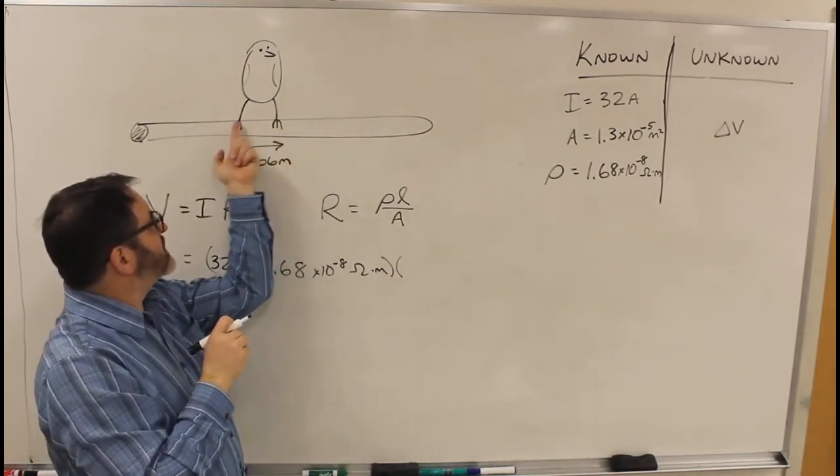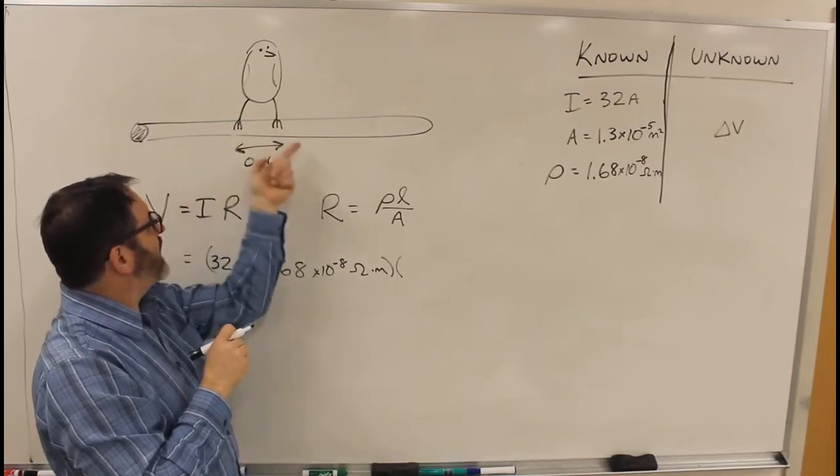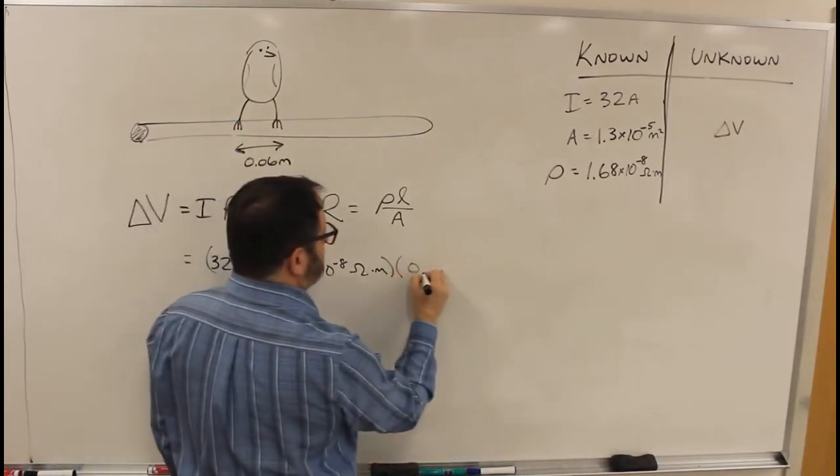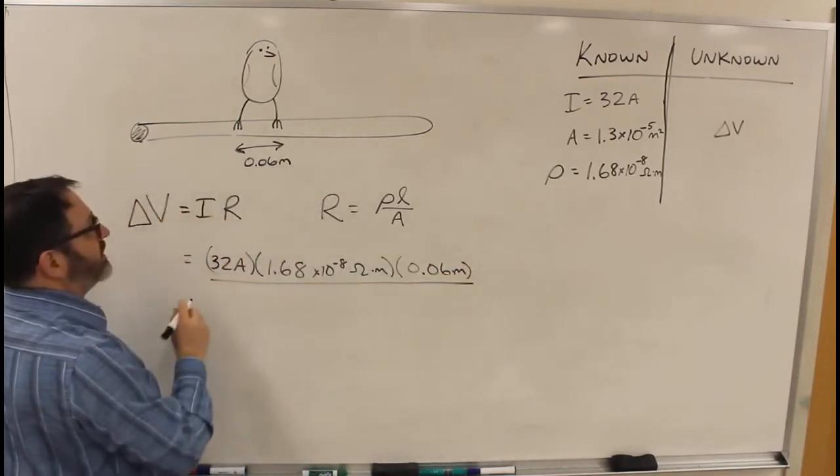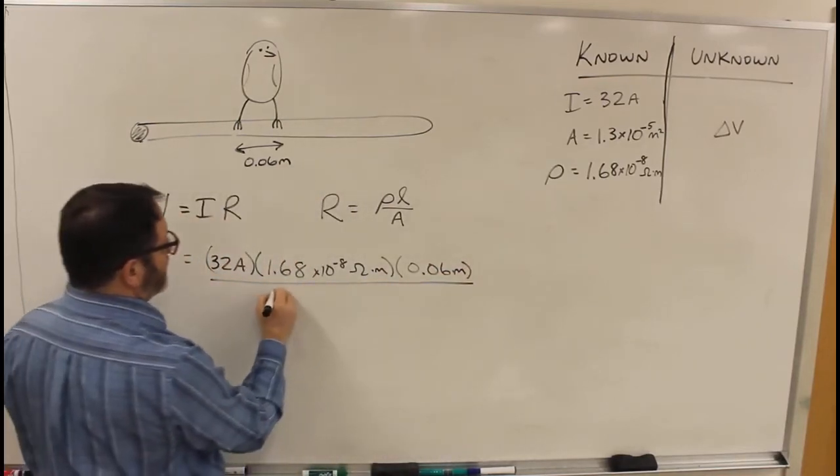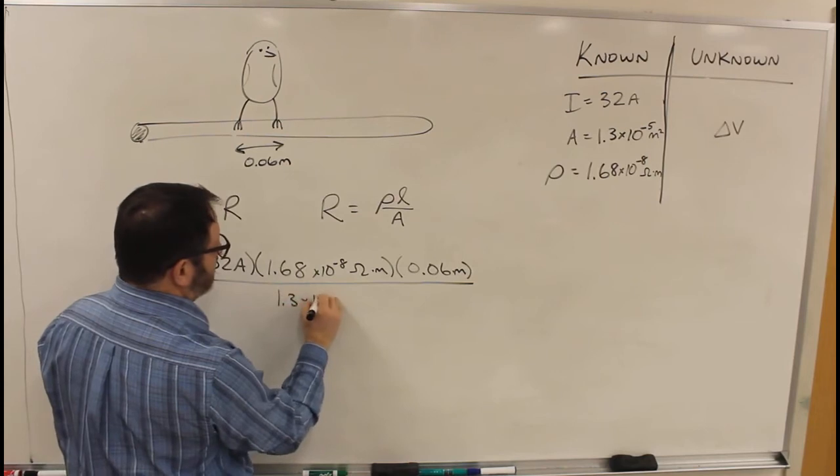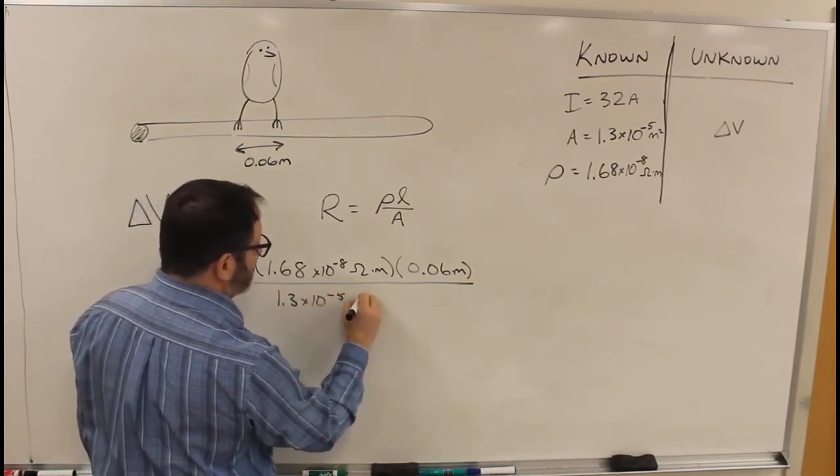Because this is really the section that we're interested in. So that length, 0.06 meters, over the cross-sectional area, 1.3 times 10 to the minus 5 meters squared.